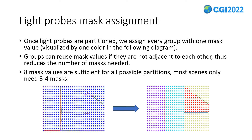After probes are partitioned into groups, we assign mask values to the groups. Each group should have one mask value different from its adjacent groups, but non-adjacent groups may share the same mask value. The maximum number of required mask values is always eight, so each of the eight probes in the same cell can have one different mask value. However, in most cases only three to four mask values are sufficient to model the whole scene structure.